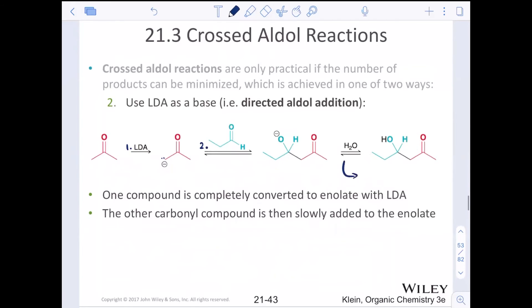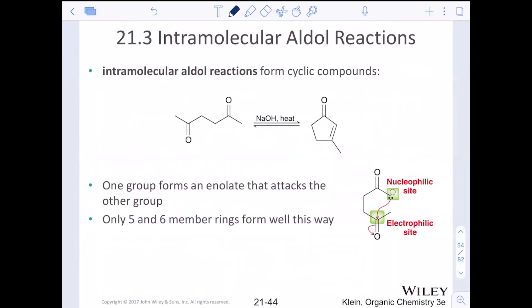If you add heat, then you would do the alpha beta carbon carbon double bond product. One carbon is completely converted to enolate with LDA. That is the irreversible enolate formation. And then the other carbonyl compound is then slowly added in, just sprinkle that in like sprinkles on top.